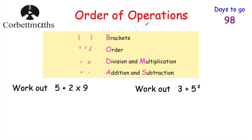So our topic today is order of operations, or BODMAS or BIDMAS. Here's part of the revision card. The order of operations: first, brackets. Then any orders or indices — that's like your squares, your cubes, your square roots and so on. Then any divisions and multiplications, working from left to right. And finally, additions and subtractions, also from left to right.